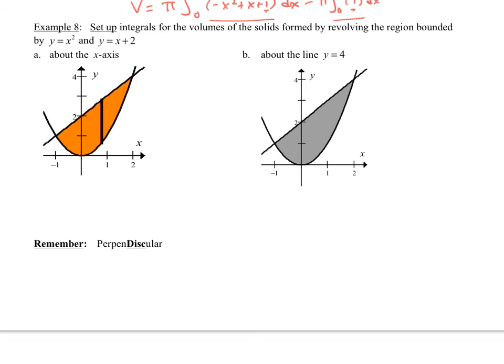Okay, example number eight. Here we go. Set up the integrals of volumes formed by revolving this around y equals x squared and y equals x plus two. Here's the picture. We want to revolve around the x-axis. There's the x-axis. Axis of rotation.